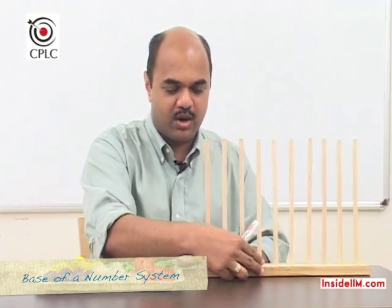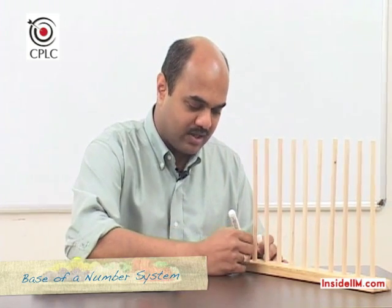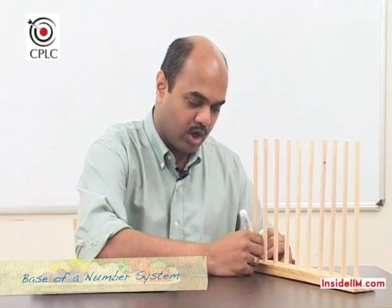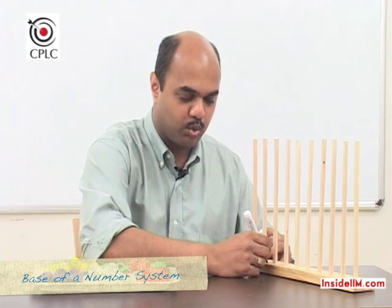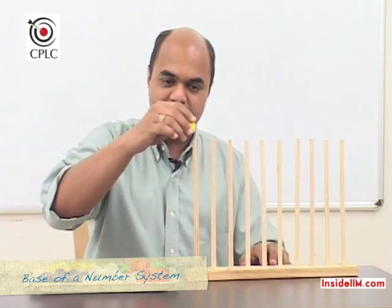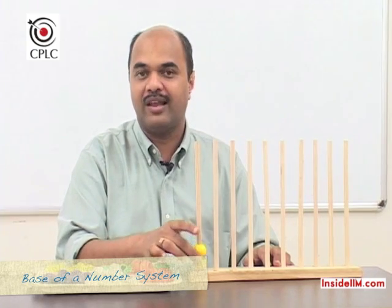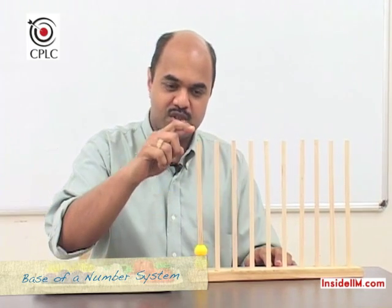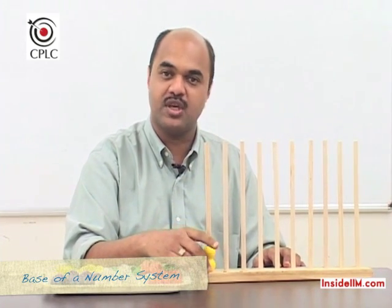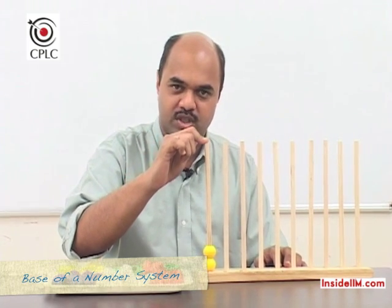So if we now say that this particular column has a place value of 8 raised to 0, which would mean 1, this particular column has a place value of 8 raised to 1, and the next one is 8 raised to 2, and so on. Now if we start putting in these beads, two beads would mean a total value of 2. Since this is base 8, we can use only 8 digits from 0 to 7, so I can put in a maximum of 7 beads into this particular column.